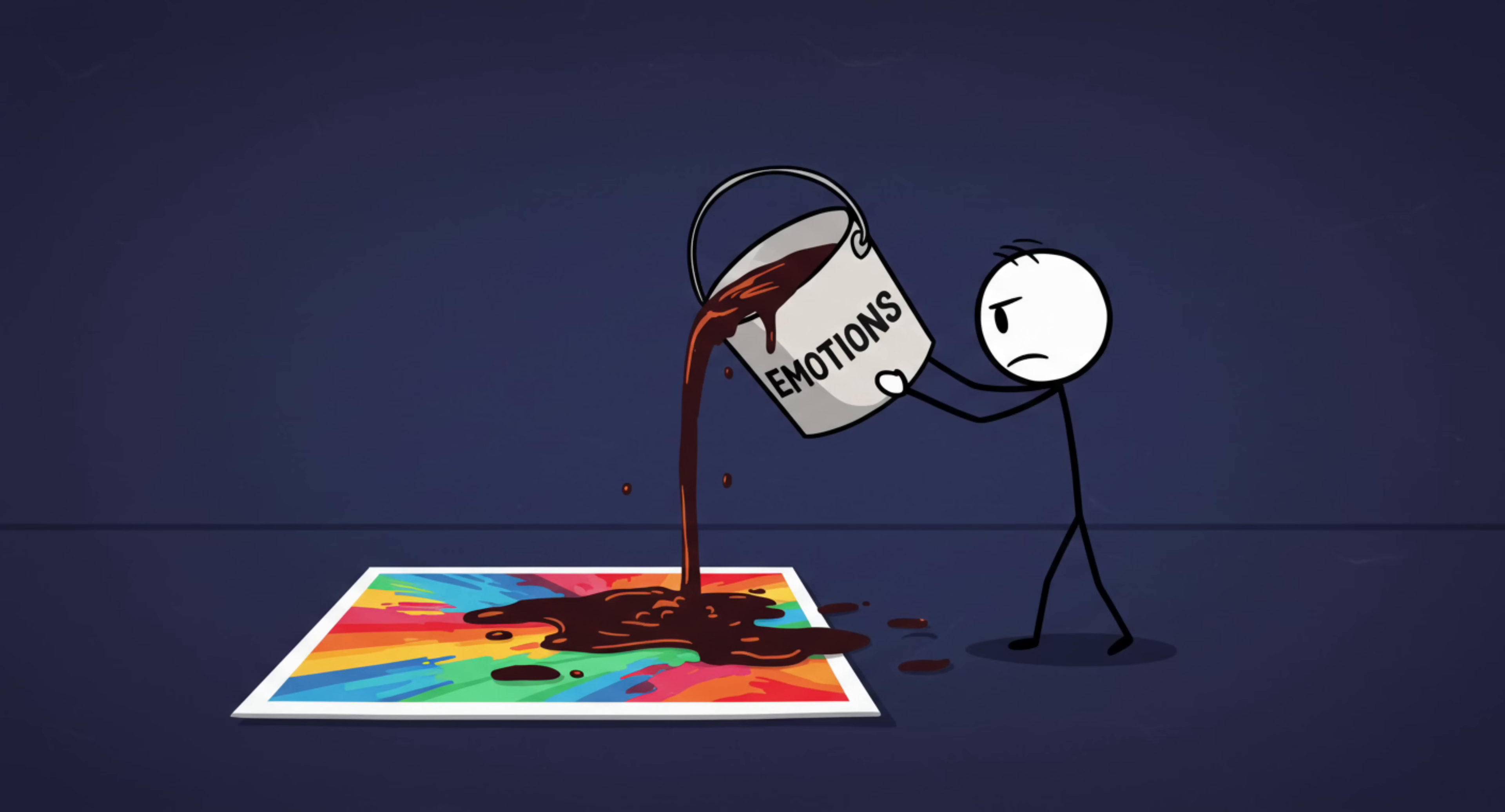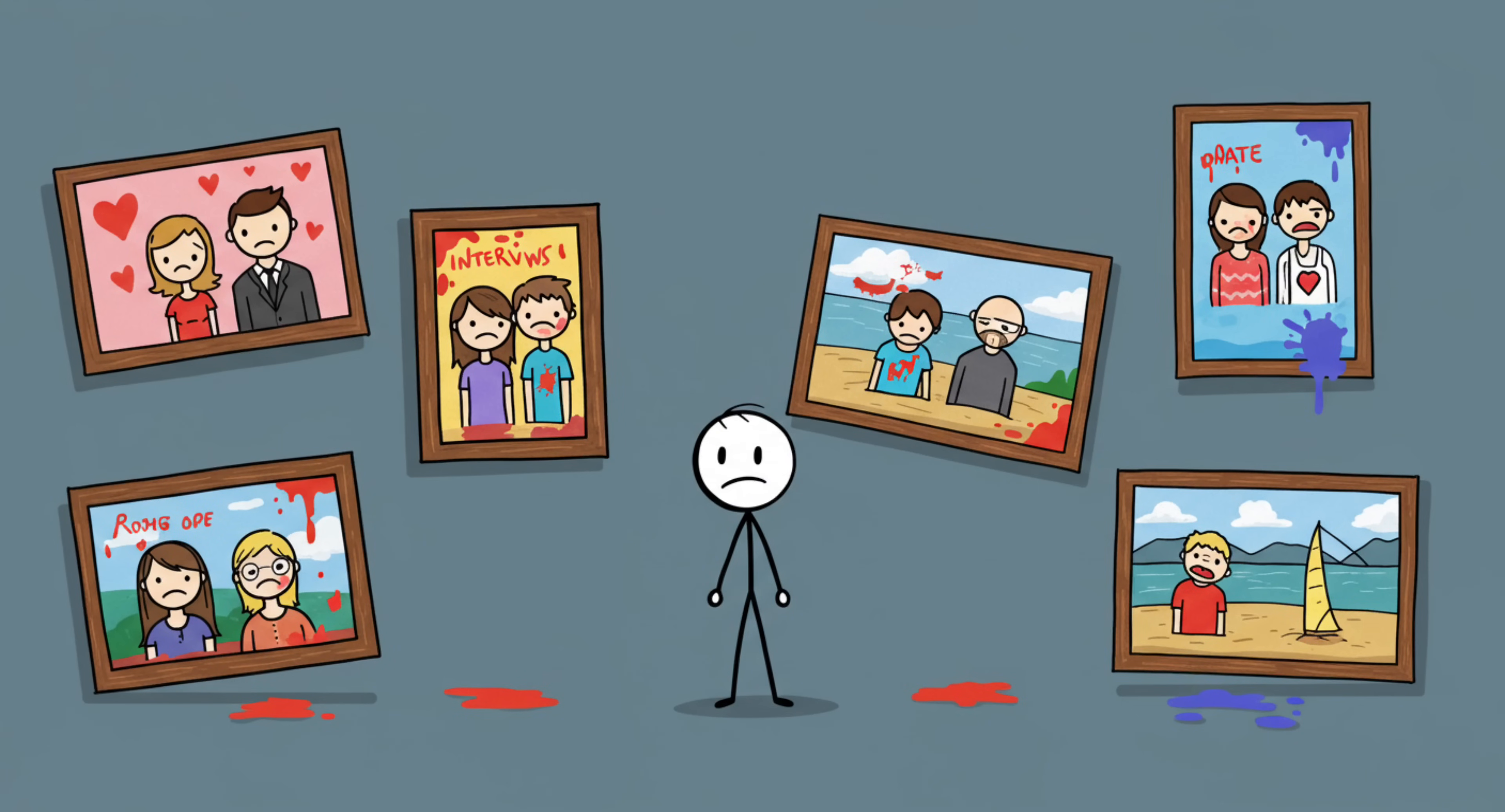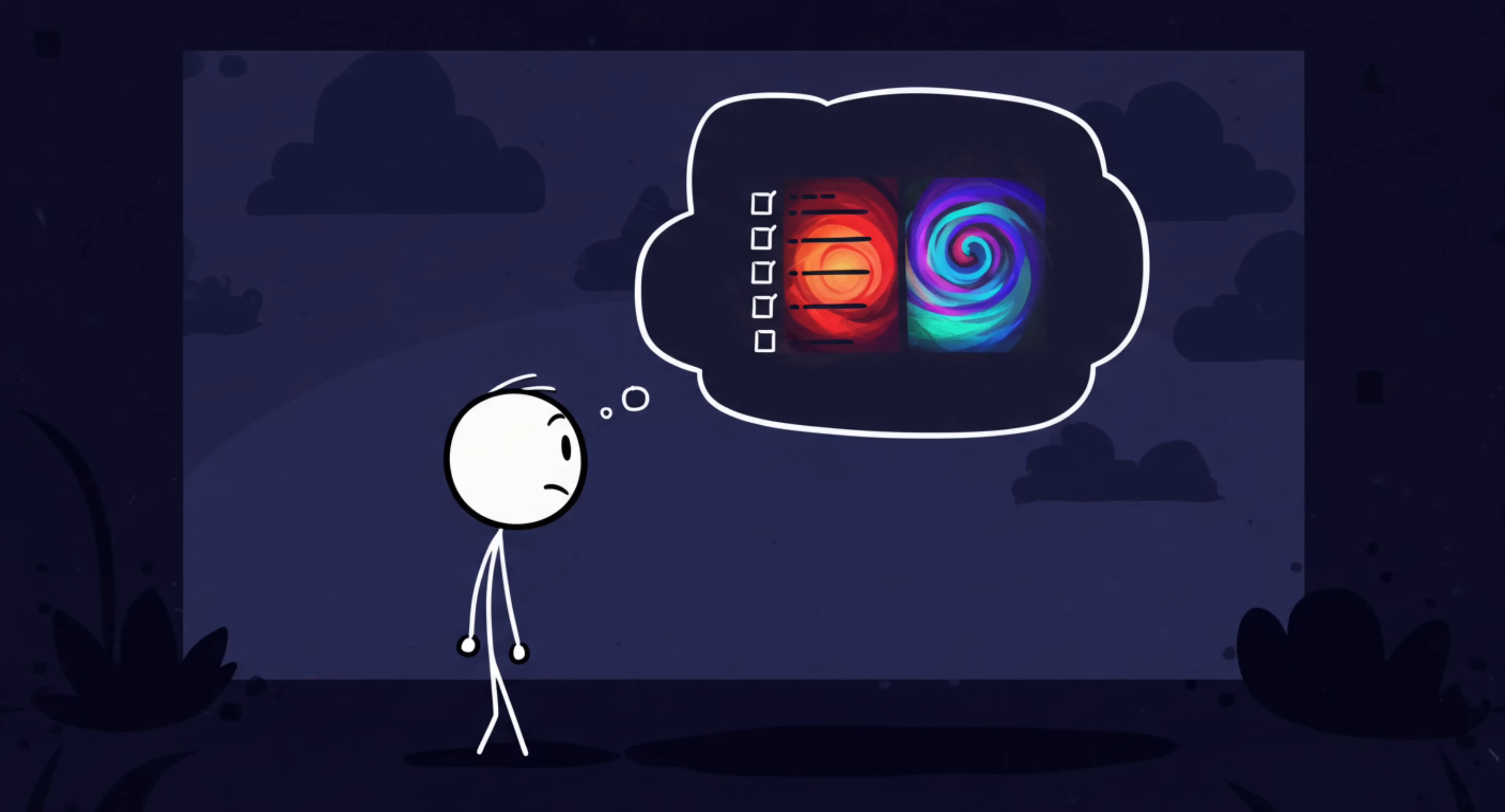This is called emotional memory coloring. Stress basically takes whatever mood you were in and paints the whole memory with it, like a toddler with a crayon. And it's not just dinner. It could happen with dates, interviews, vacations, anything. Stress makes you remember the vibe, not the facts.